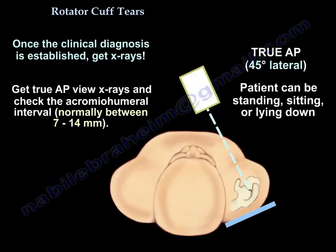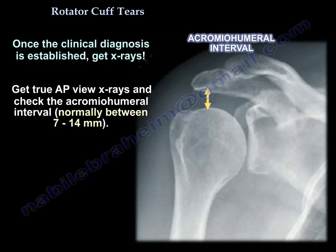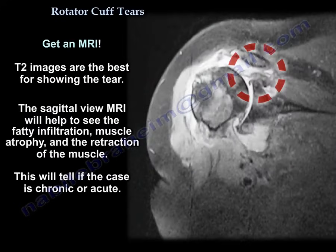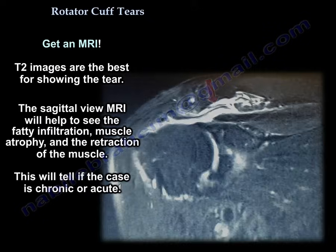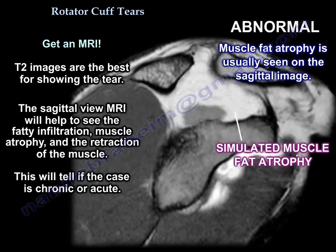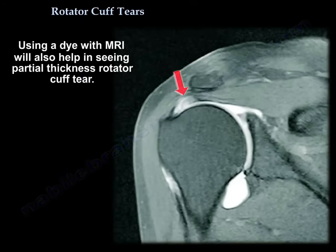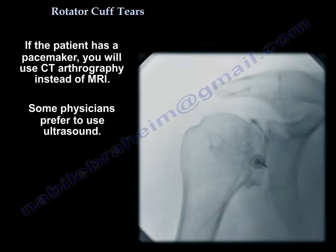Once the clinical diagnosis is established, you will obtain X-rays. Get a true AP view and check the acromiohumeral interval, which is normally 7 to 14 millimeters. You will also get an MRI — T2 images are best for showing the tear. The sagittal view helps you assess muscle atrophy, fat infiltration, and retraction, telling you whether the case is chronic or acute. MRI with contrast dye can help show partial thickness tears. If the patient has a pacemaker, use CT arthrography instead.